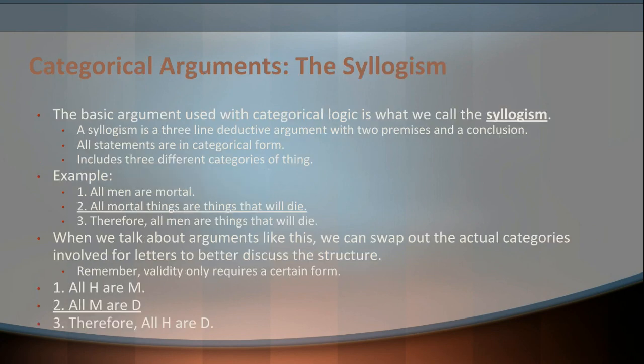Moving ahead — actually making arguments with these things. That is, using the four basic statements to start forming actual arguments to talk about the world. The basic argument used with categorical logic is what's referred to as a syllogism. Now, a syllogism is not just any old argument — syllogisms are rather particular kinds of forms. It's like a sonnet in poetry: it has a certain structure, a certain length, and there are certain rules it has to follow.